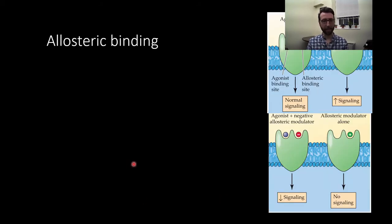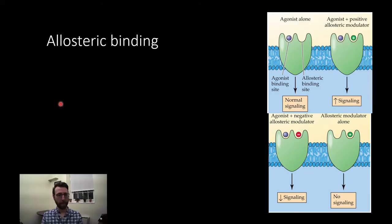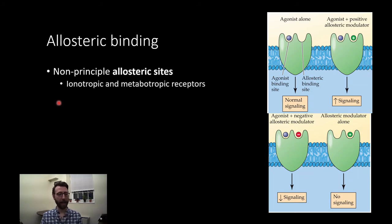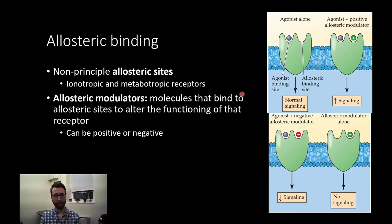The last thing I want to mention is allosteric binding. This is something we've sort of touched on previously, but I'm going to talk about it in more depth. Allosteric binding, I've also referred to this as non-competitive or indirect binding, happens at non-principle allosteric sites. This can happen on both ionotropic and metabotropic receptors. It's basically just binding anywhere that's not the principal site. So if we have a GABA receptor, for example, if something can bind and produce some kind of effect at a site other than the GABA site, then we would call that allosteric binding or binding at an allosteric site. An allosteric modulator is a molecule that can bind to an allosteric site and alter the functioning of that receptor.